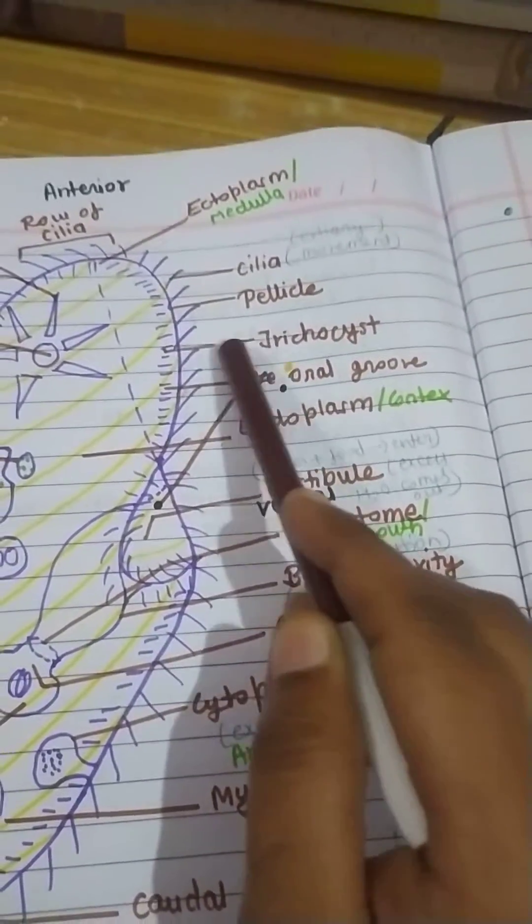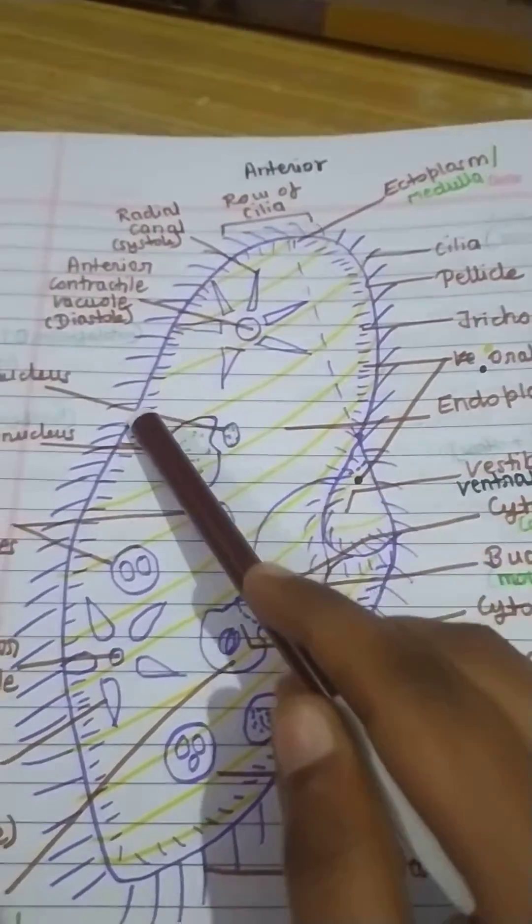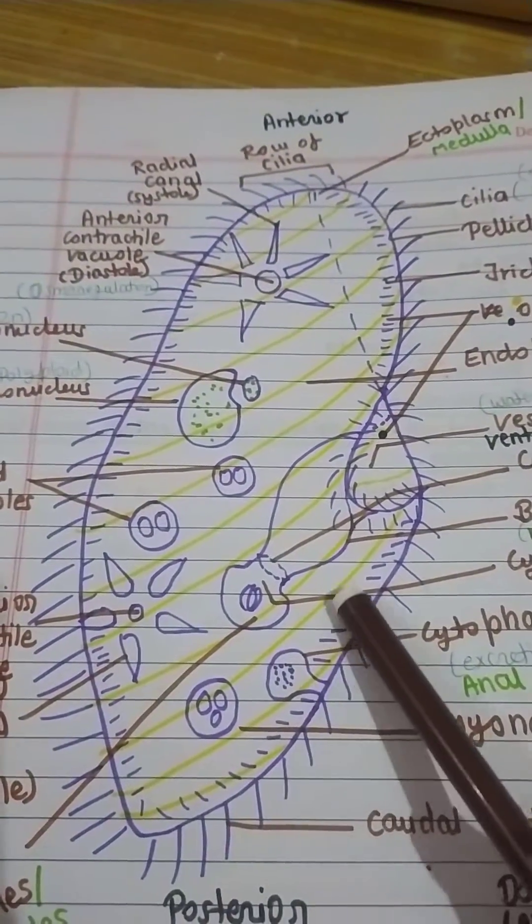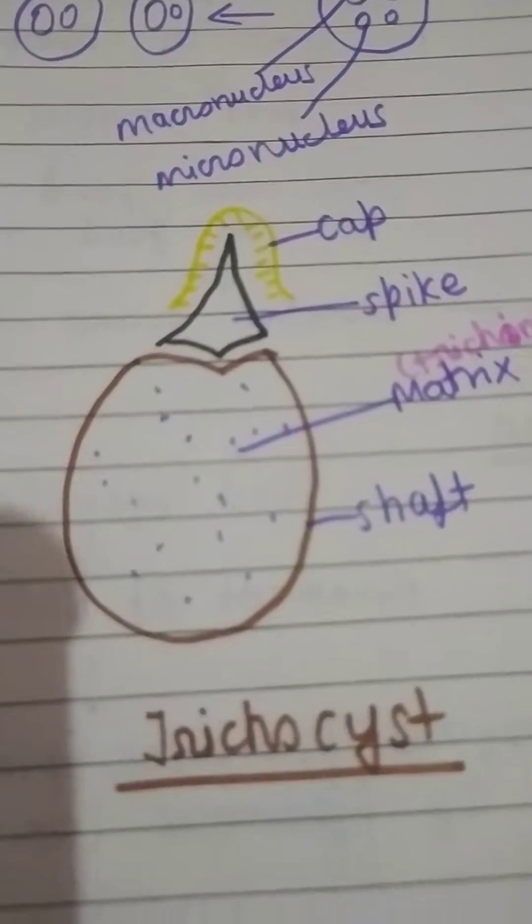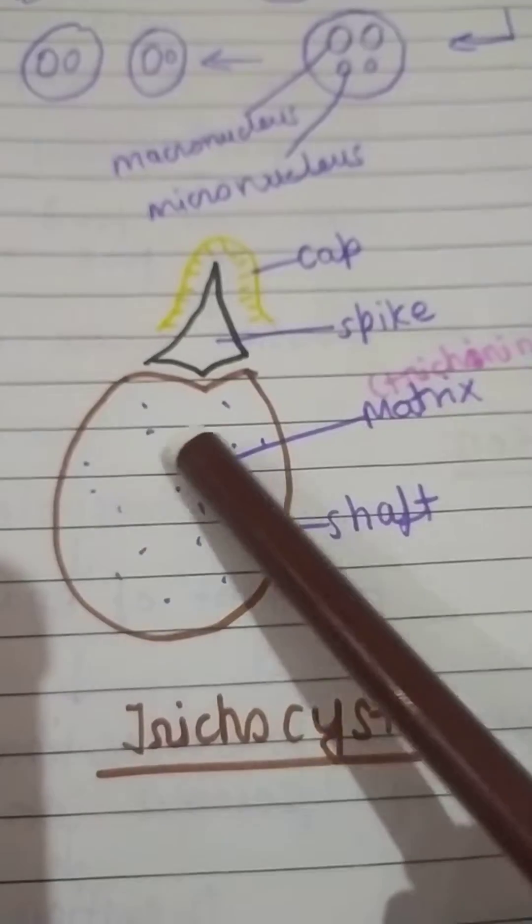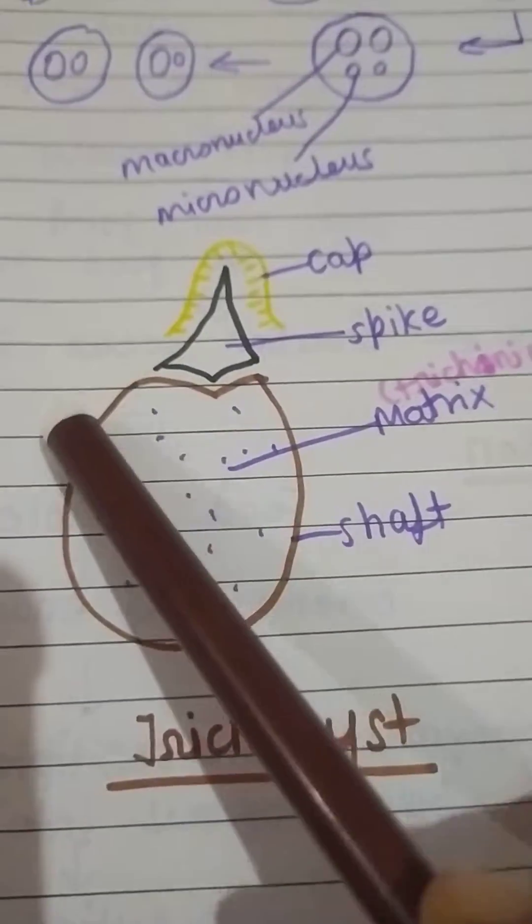This is the position of the trichocyst. See, this all present in all over the body, this is known as trichocyst. So I am going to tell you diagram of the trichocyst. The trichocyst consists of shaft. First this is known as shaft.